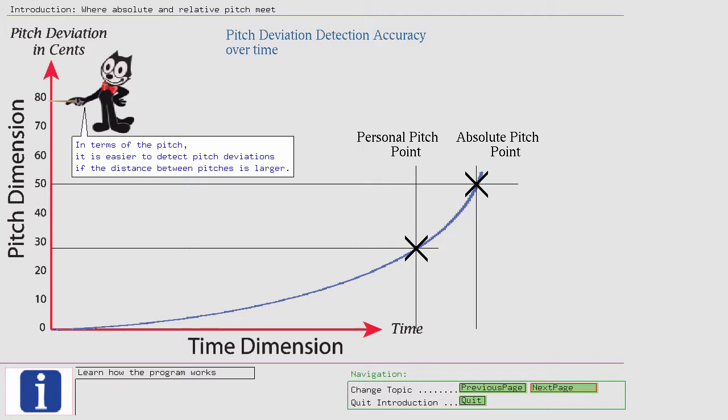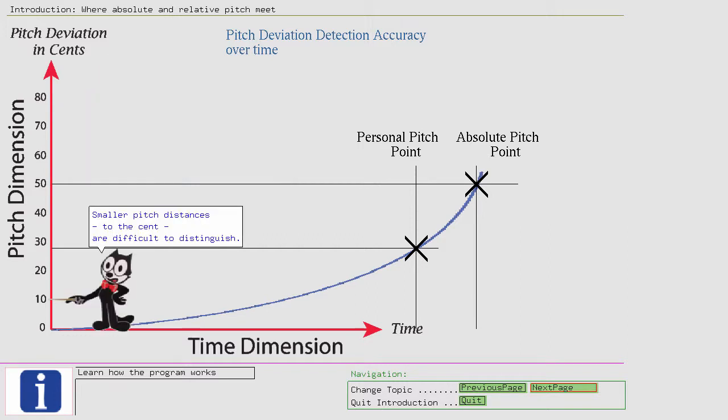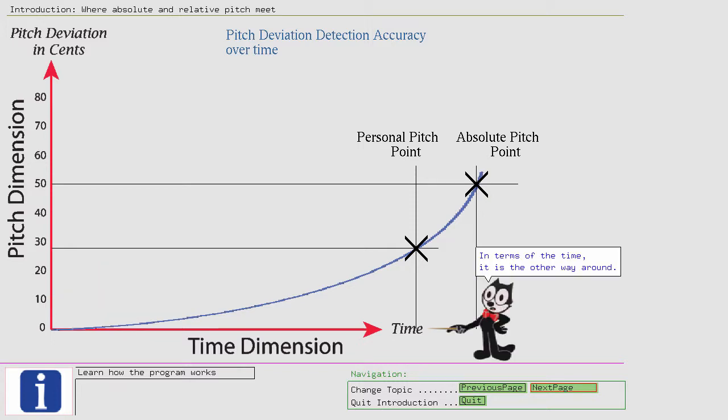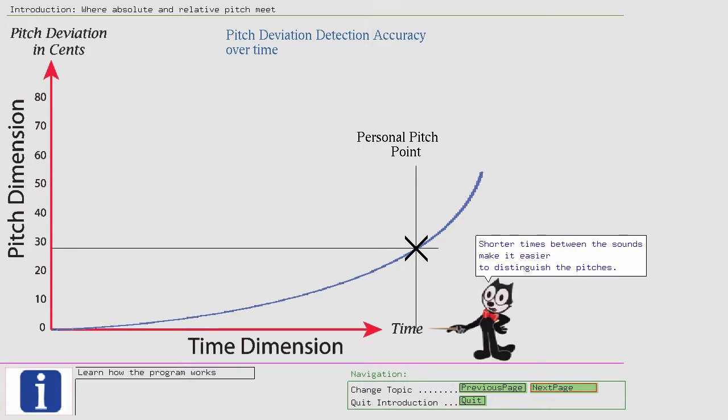In terms of the pitch, it is easier to detect pitch deviations if the distance between pitches is larger. Smaller pitch distances, to the cent, are difficult to distinguish. In terms of the time, it is the other way around. Shorter times between the sounds make it easier to distinguish the pitches.